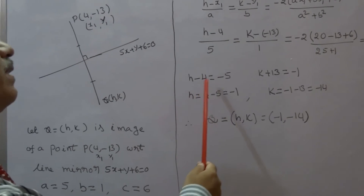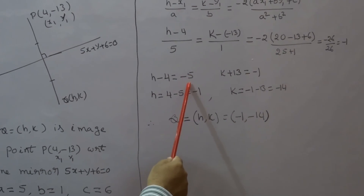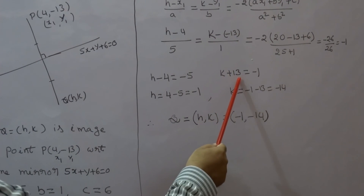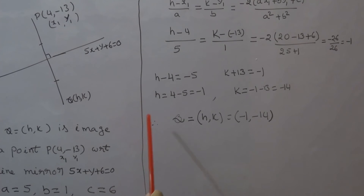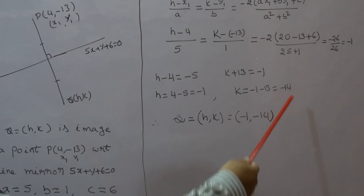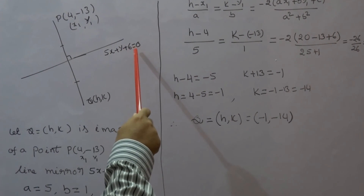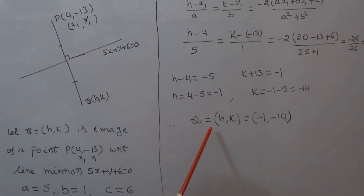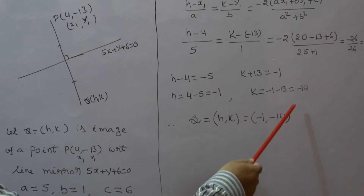So h - 4 = 5 × (-1) = -5, giving h = 4 - 5 = -1. And k + 13 = 1 × (-1) = -1, giving k = -1 - 13 = -14. Hence the image of point P with respect to the line mirror 5x + y + 6 = 0 is Q = (h, k) = (-1, -14).